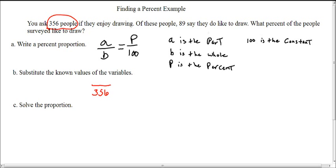Now, of these people, they said 89 like to draw. So we have 89 that's preferring to draw. So 89 will be our a or our part.